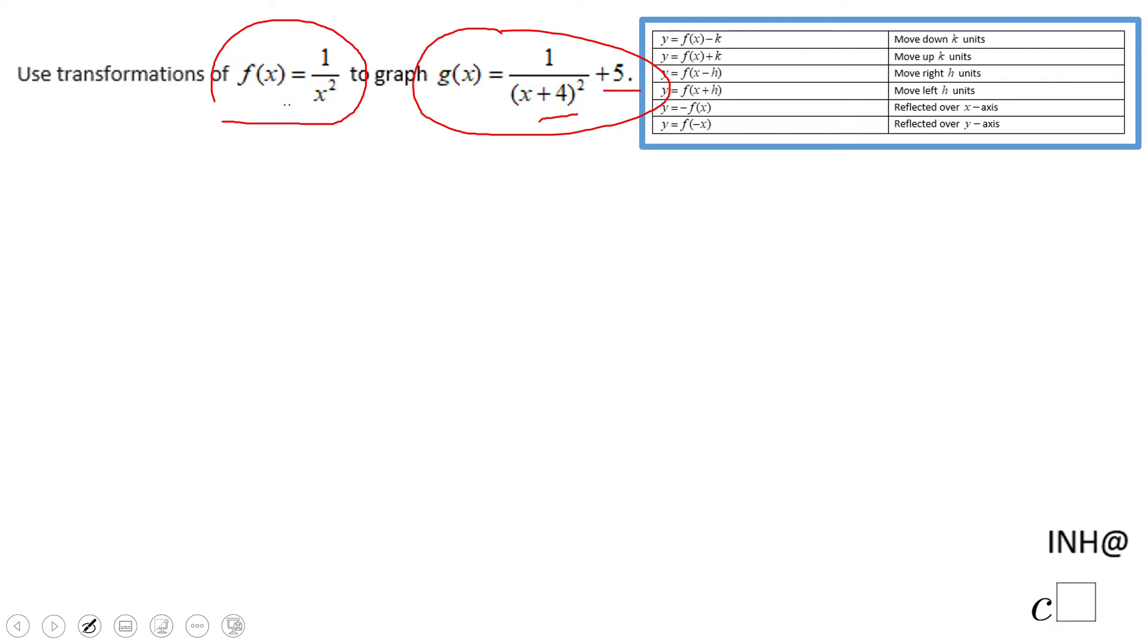You see here the x plus 4 is going to go this part so it's going to be move left four units. And the plus 5, which is this choice, is going to be up five units.